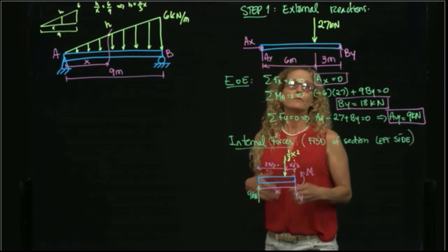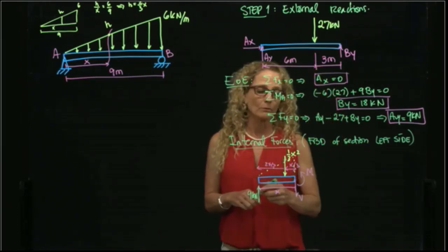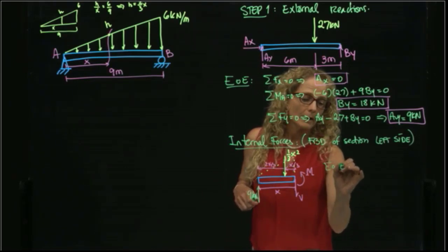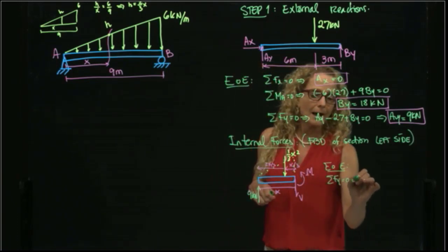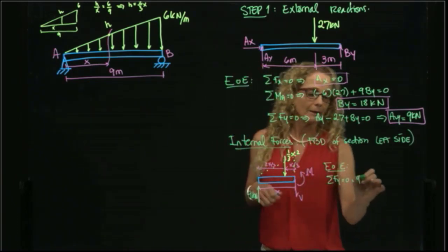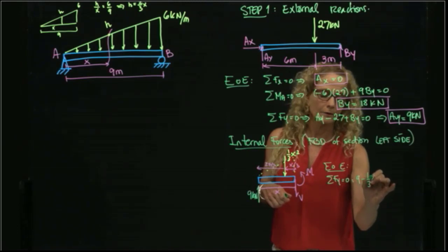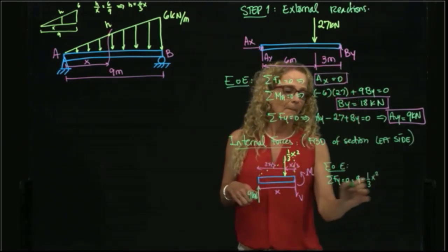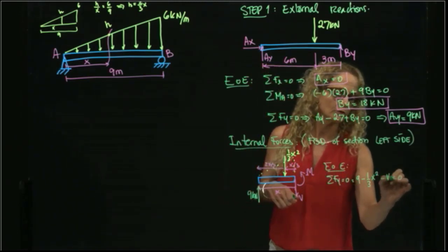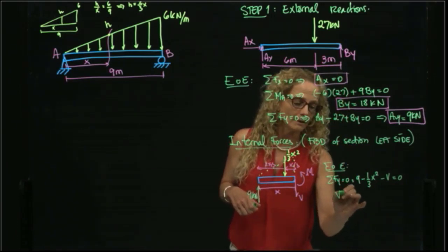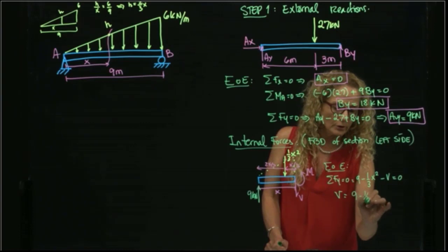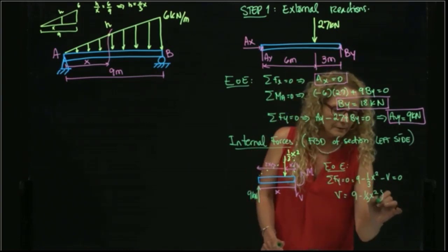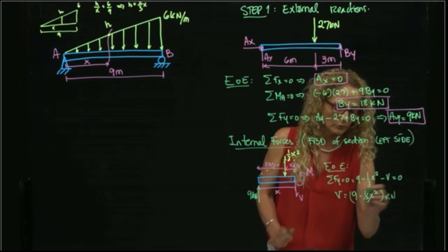Now that I have my free body diagram, I can apply my equations of equilibrium. I will add forces in Y, and I have 9 minus one-third X squared minus V equals 0. Therefore, V is equal to 9 minus one-third X squared, and this is in kilonewtons.